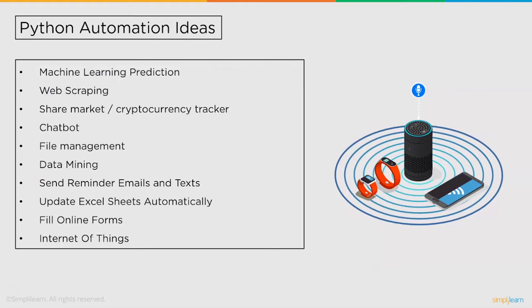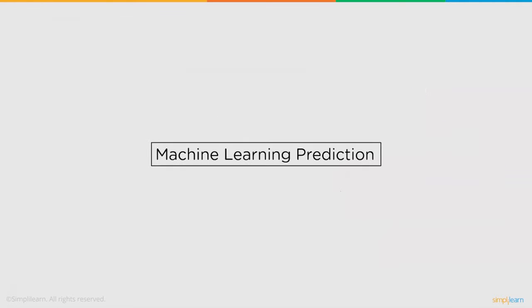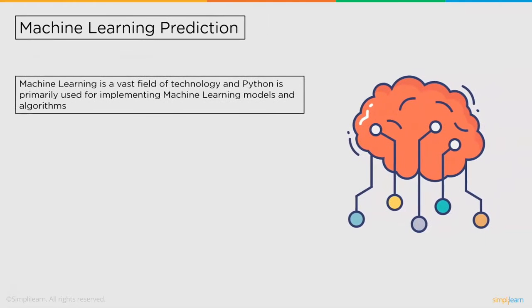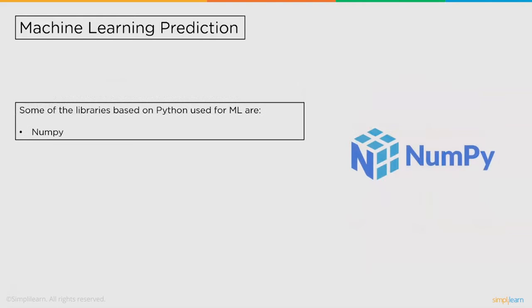So without further ado, let's get started. First up, machine learning. Machine learning is huge — its uses spread across almost every technological field. Python is commonly used for implementing machine learning models and algorithms. Here are some of the most popular Python libraries used for solving machine learning problems.